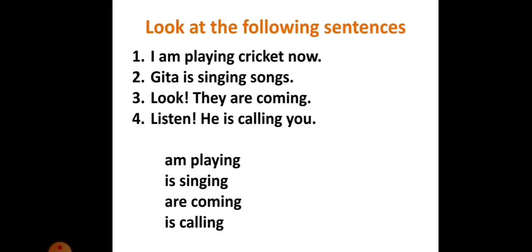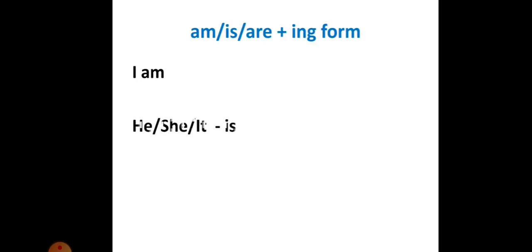We say: I am; he, she, it — is; you, they, we — are. We use this pattern to talk about actions happening at the time of speaking — in other words, actions happening now.